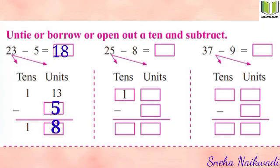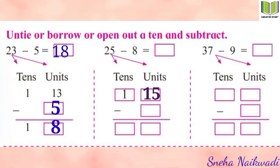Next: 25 minus 8. There are 2 tens, so we untie one ten. That untied 10 goes towards the 5 units, making 15 units. One ten remains. Now 15 minus 8 equals 7, and 1 ten remains. So 25 minus 8 equals 17.